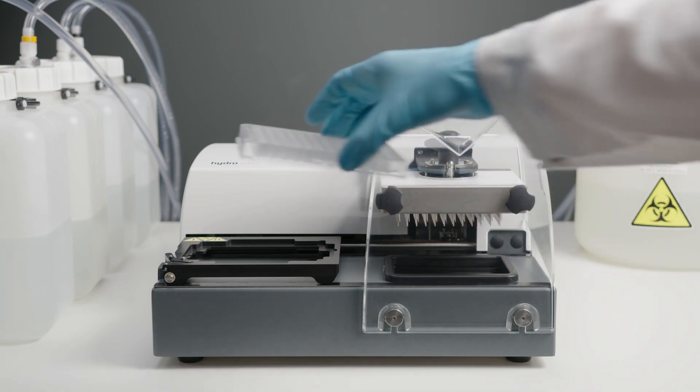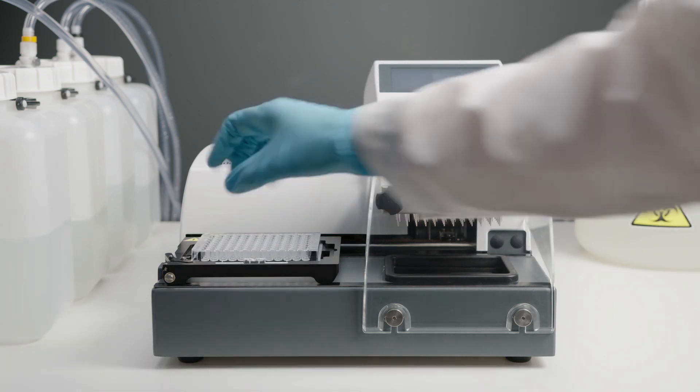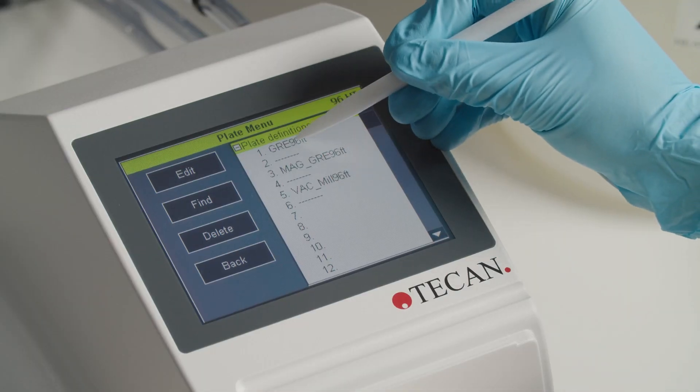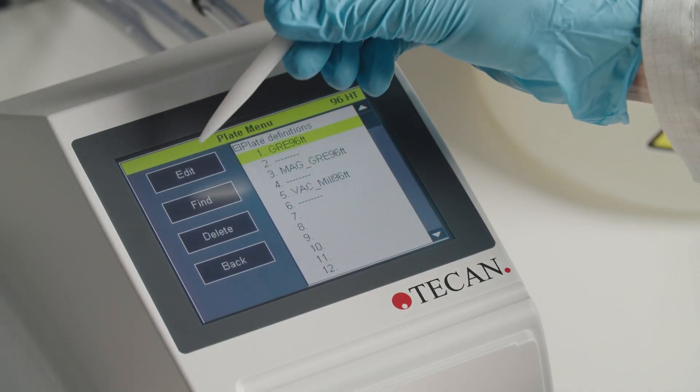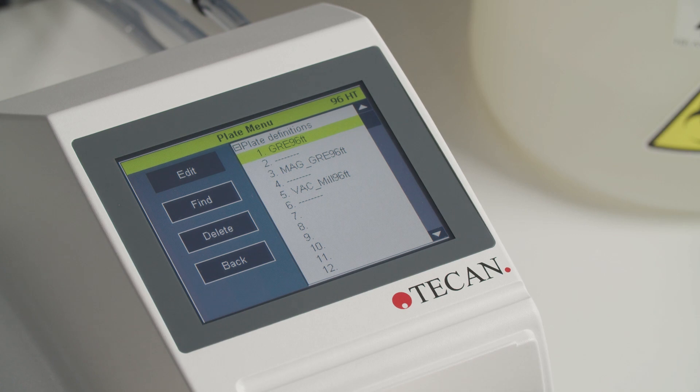Place the corresponding plate on the plate carrier before starting the process. Choose a plate definition identical to the well format of your plate and press edit to change the plate parameters.